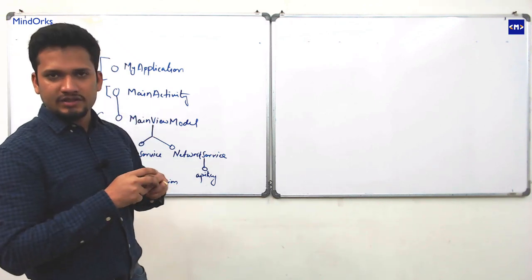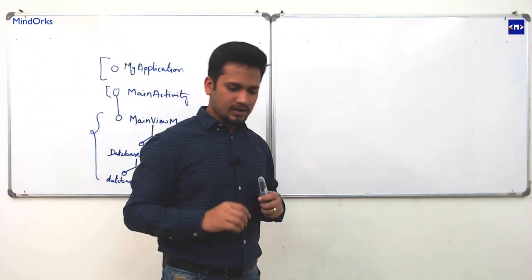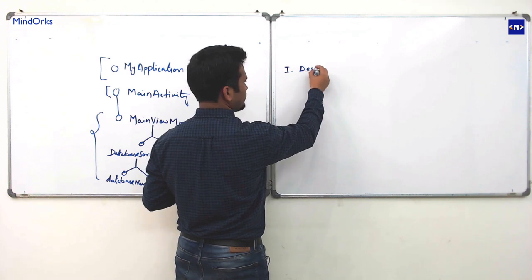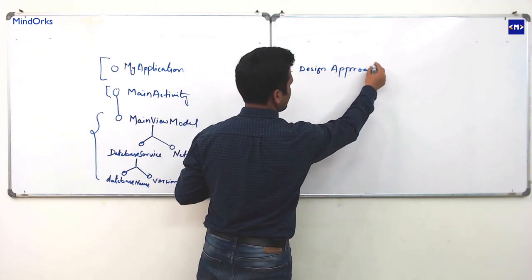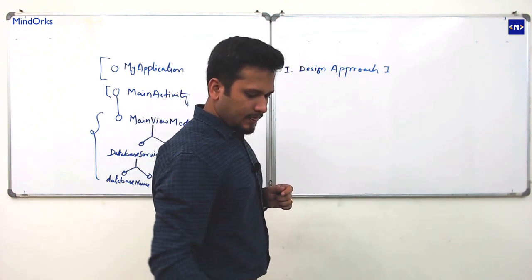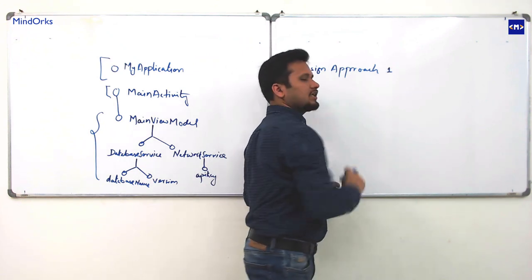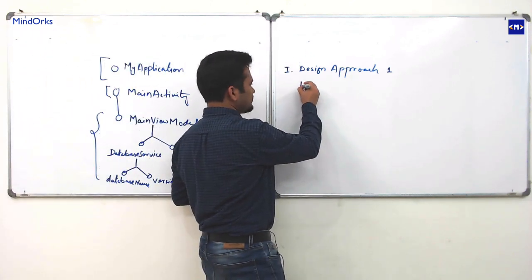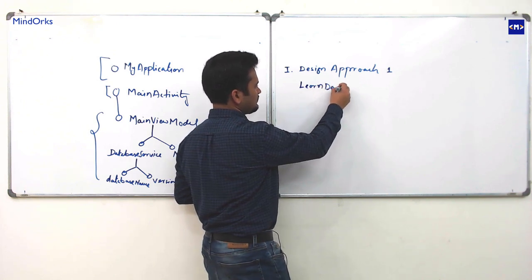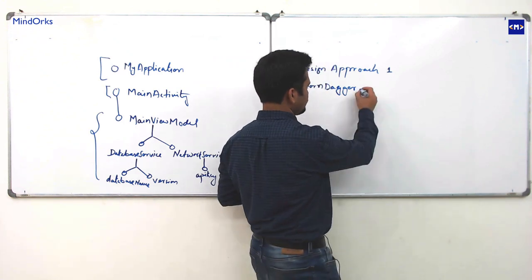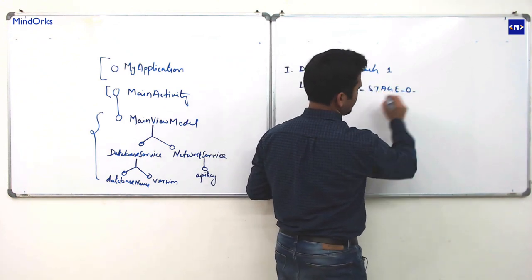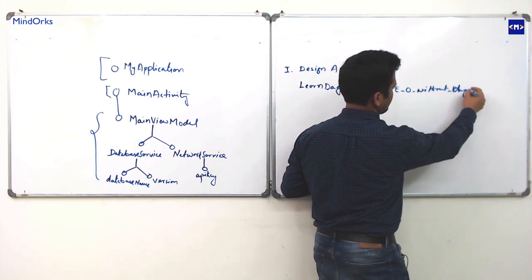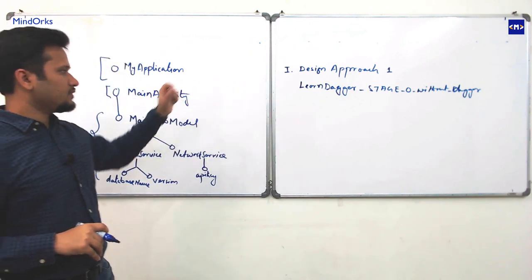Let's now create the structure for this use case — how should we design our classes? This is Design Approach 1. You can refer to this in the provided project under 'Learn Dagger, Stage Zero — without Dagger.'